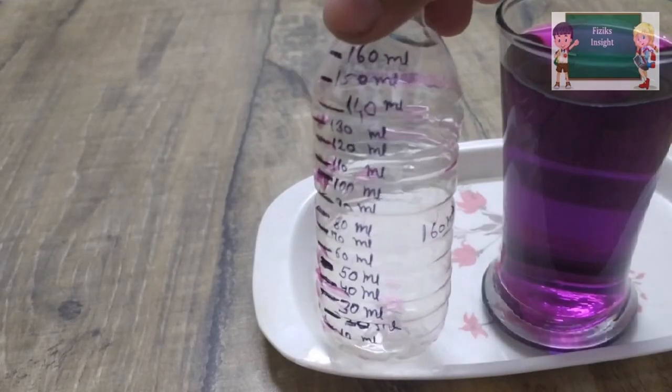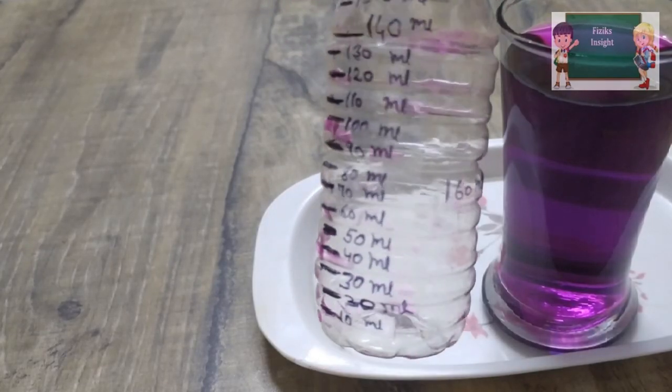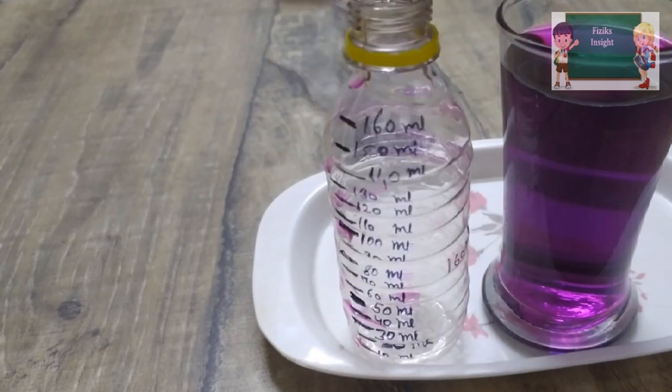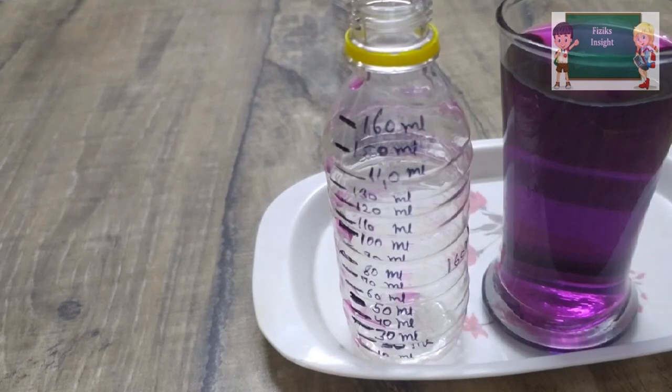Now empty this bottle. You can clearly see that we have obtained 16 graduations of 10 ml each. That's why we have obtained this cylinder of 160 ml.